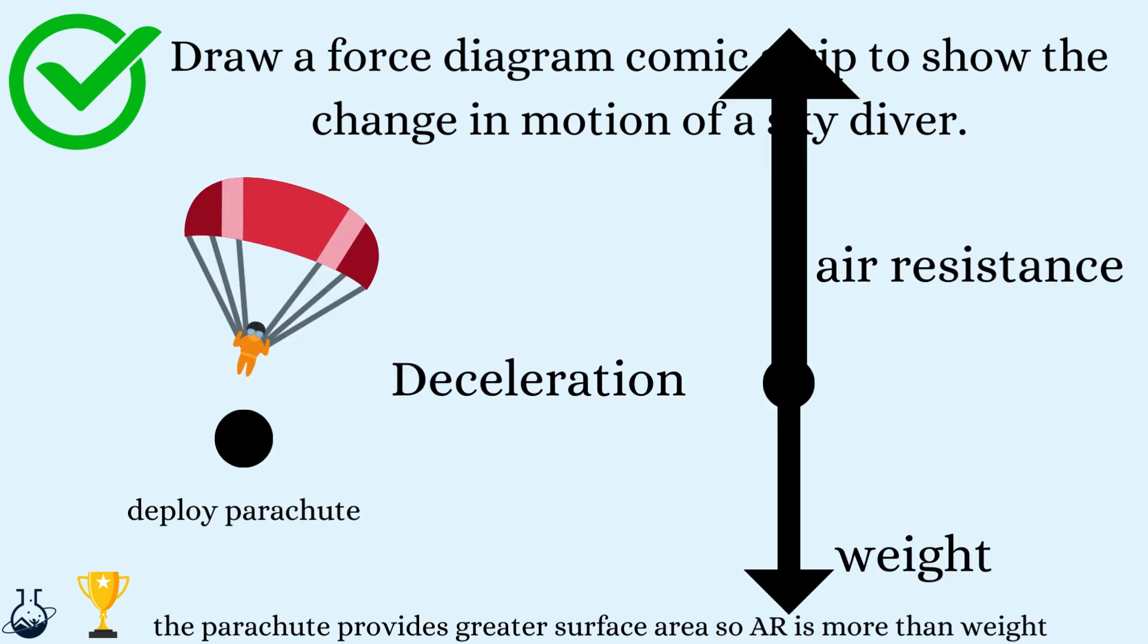When the diver deploys the parachute, this increases the surface area which drastically increases the air resistance and becomes a larger force than weight, causing the skydiver to decelerate and slow down. This is very important.